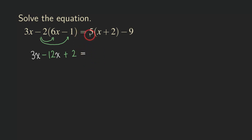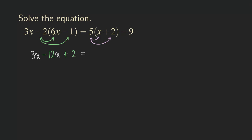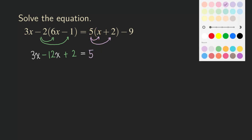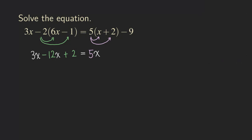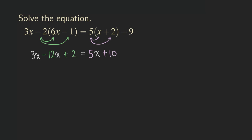Next, we distribute 5 to the x and then to the 2. So we can distribute the 5 to the x and distribute the 5 to the 2. What we are going to get is 5x, and then positive 5 times positive 2 will give us positive 10. And then we didn't do anything to the negative 9, so we are going to just copy down the negative 9 there.